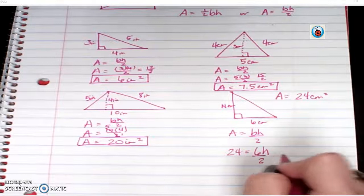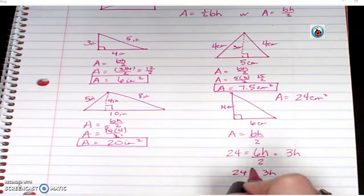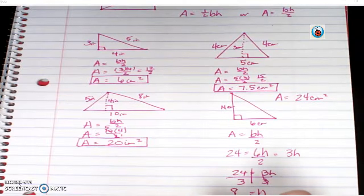Well, six divided by two is going to give me three H. Well, if I have three H in twenty-four, I would now divide both sides by three, and my height will be eight, and that's centimeters. Not squared, because it's not the area, it's one of the missing sides.